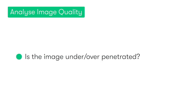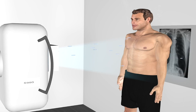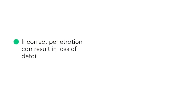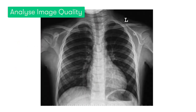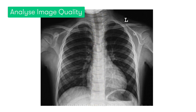Lastly, we want to check to see if the image is under or over-penetrated. Penetration refers to the degree that the X-ray beams have passed through the body. If the general penetration of the X-ray is less than necessary, it can lead to a poorly exposed image in which we have significant loss of detail. Now, with modern digital X-ray machines, this is definitely much less of an issue than it used to be, but it's still really important to check. In a well-penetrated image, the vertebral column should be visible just behind the heart, which, as you can see, is definitely the case in our image.